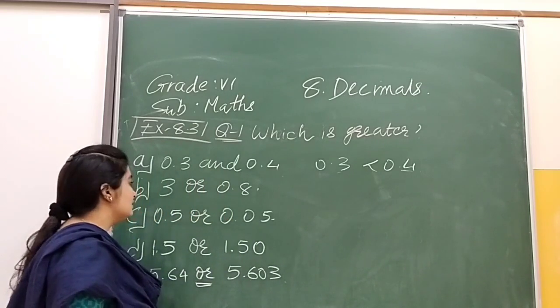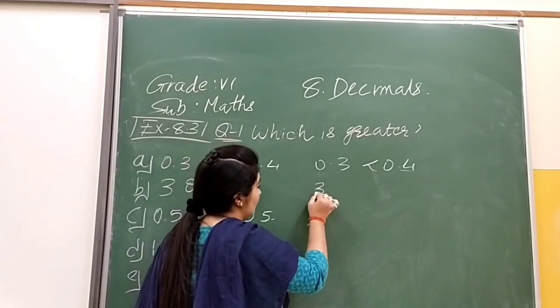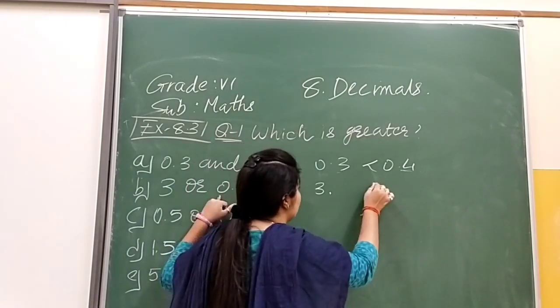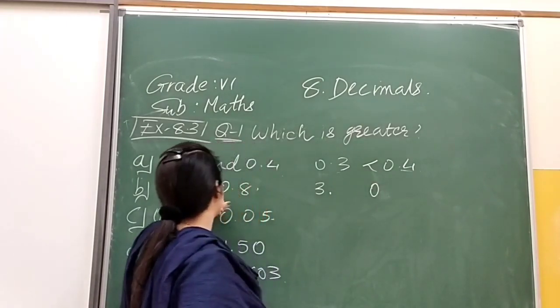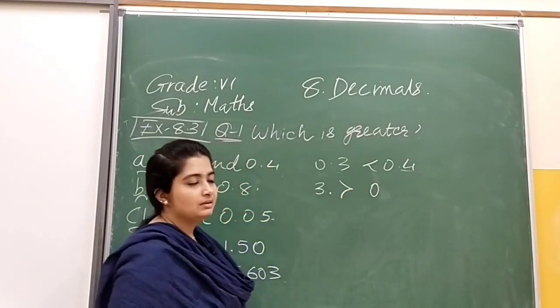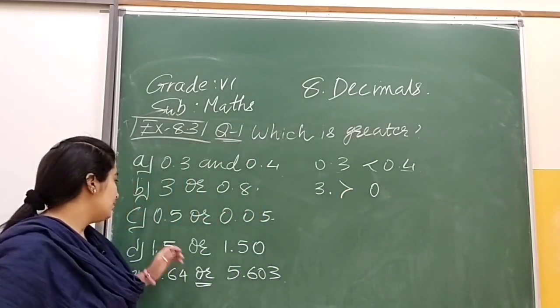Now we have 3 and 0.8. The 3 is in the ones place, and here in the ones place what do we have? Zero. So obviously we can say that 3 is greater than 0, so 3 is greater than 0.8.